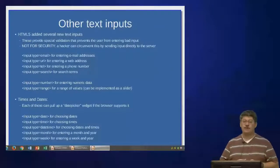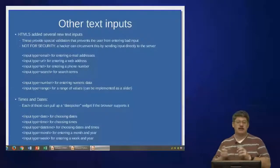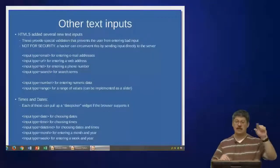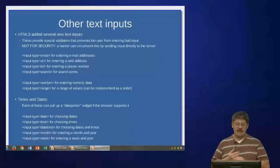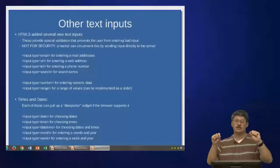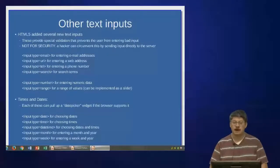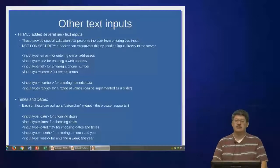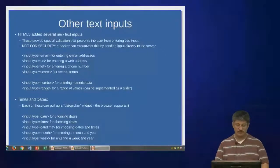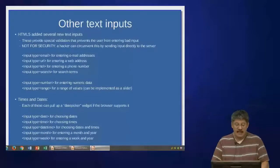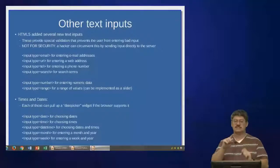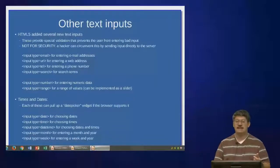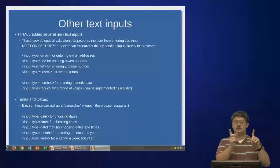If you want to enter numeric data, you can use the number input type. It produces a widget that lets the user type in numbers, and on some browsers it'll have up and down arrows to increment and decrement the value. Another nice input is the range type, which allows the user to specify a value along a range. On some browsers this is represented as a slider they can drag back and forth. You use the min and max attributes to set the range and create a slider of appropriate length.